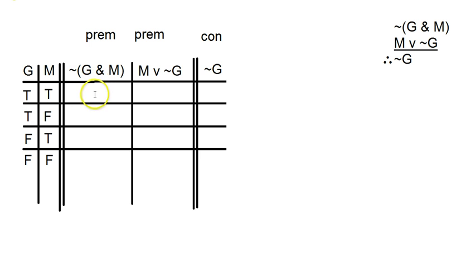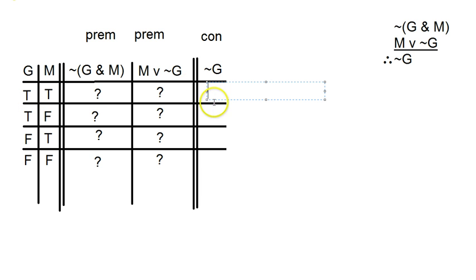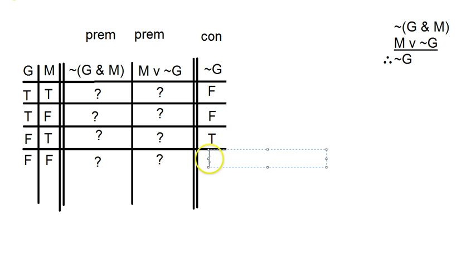At this point it's basically like we have to do a bunch of different calculations — every single one of these is a question mark: what is the truth value for the expression in this column under these possible conditions? Let's start with the easy one, NOT G. Negation just always switches the truth value of whatever it's negating. So when G is true, then NOT G is false, and when G is false, then NOT G is true. That's one column figured out.